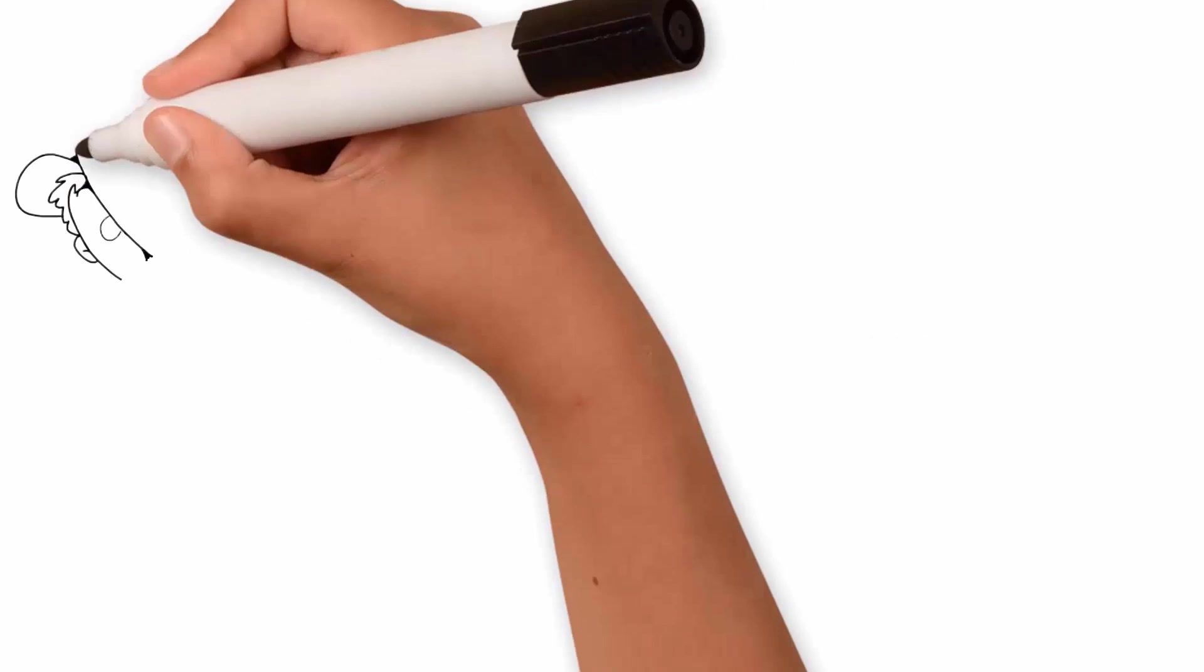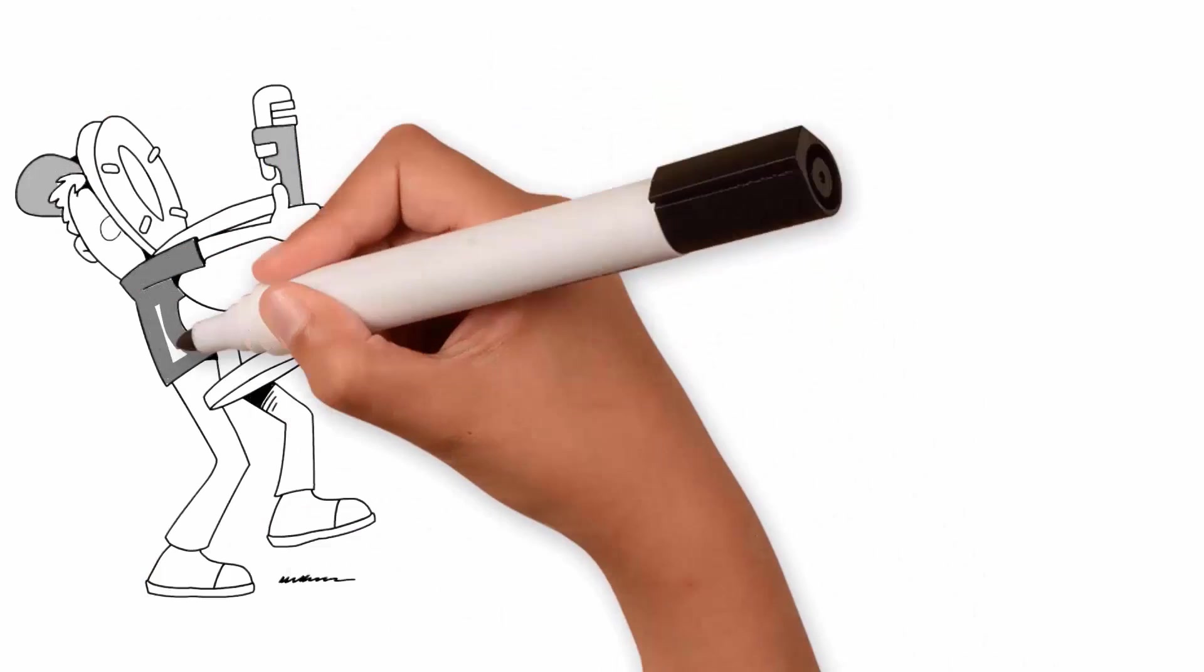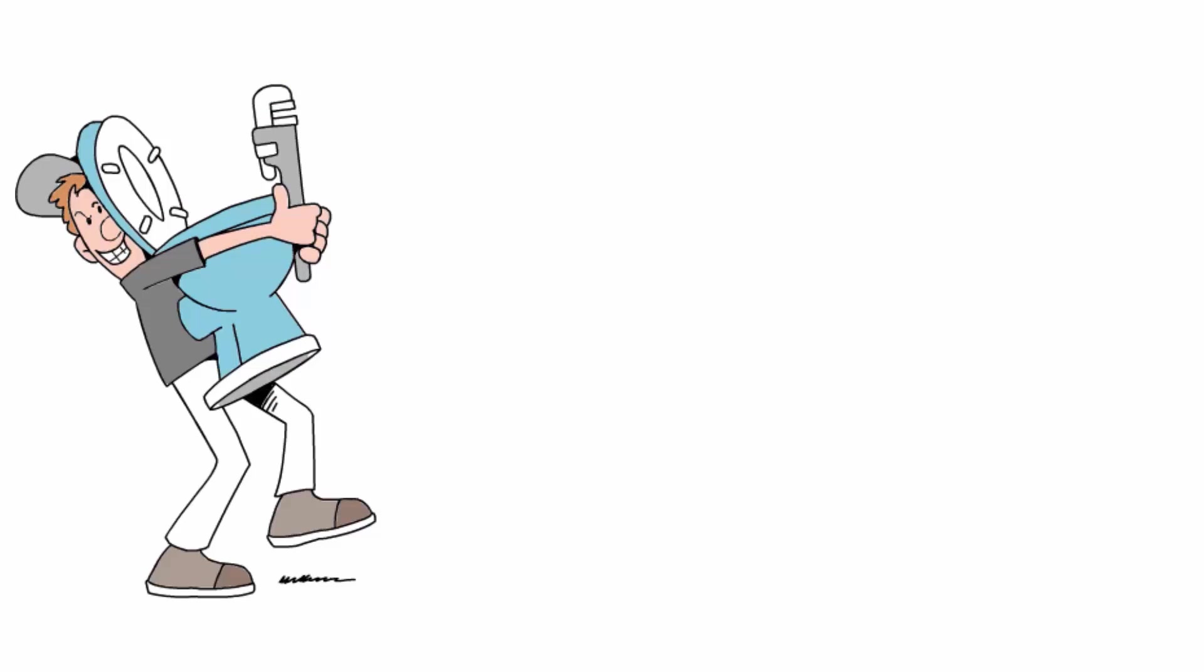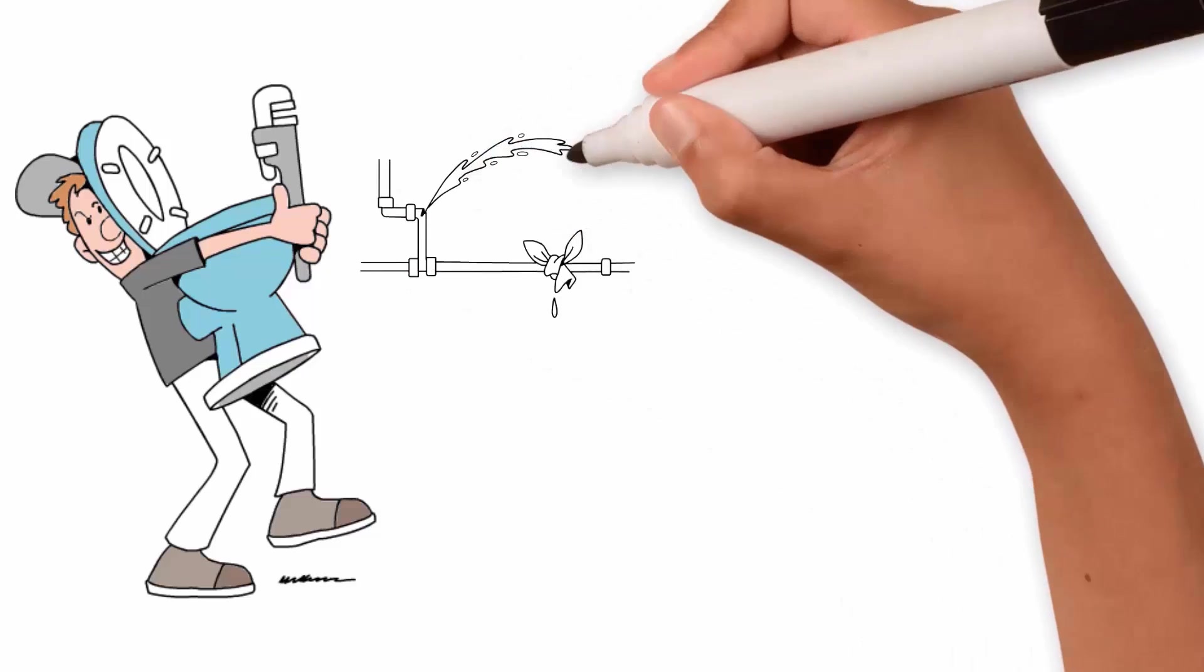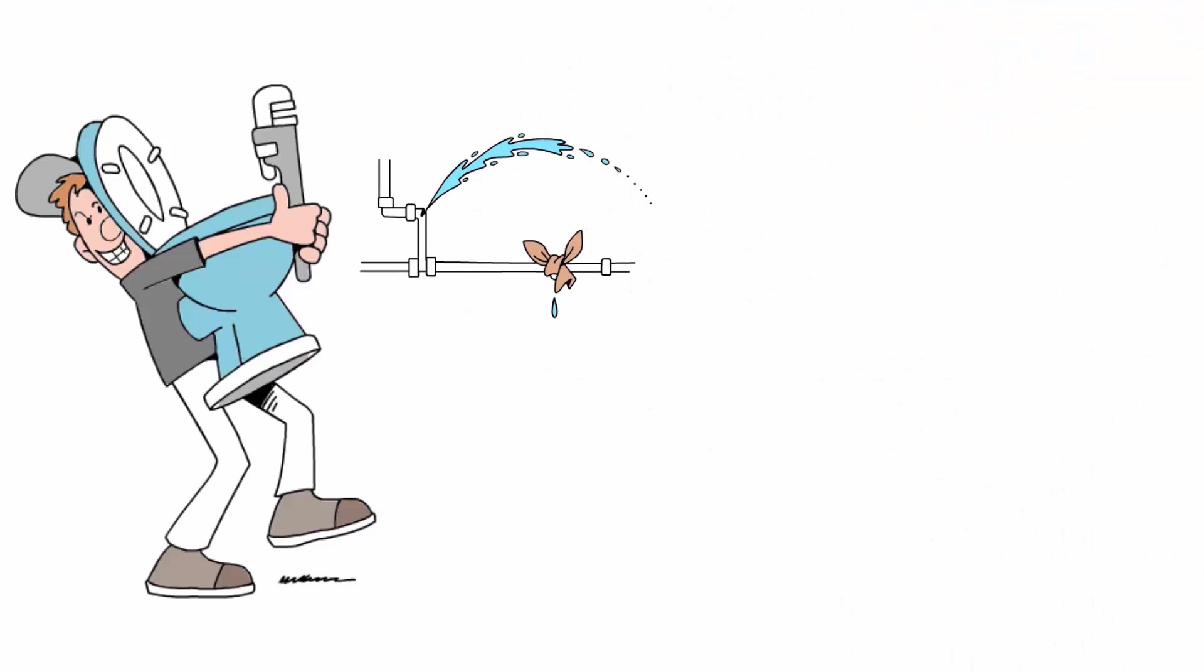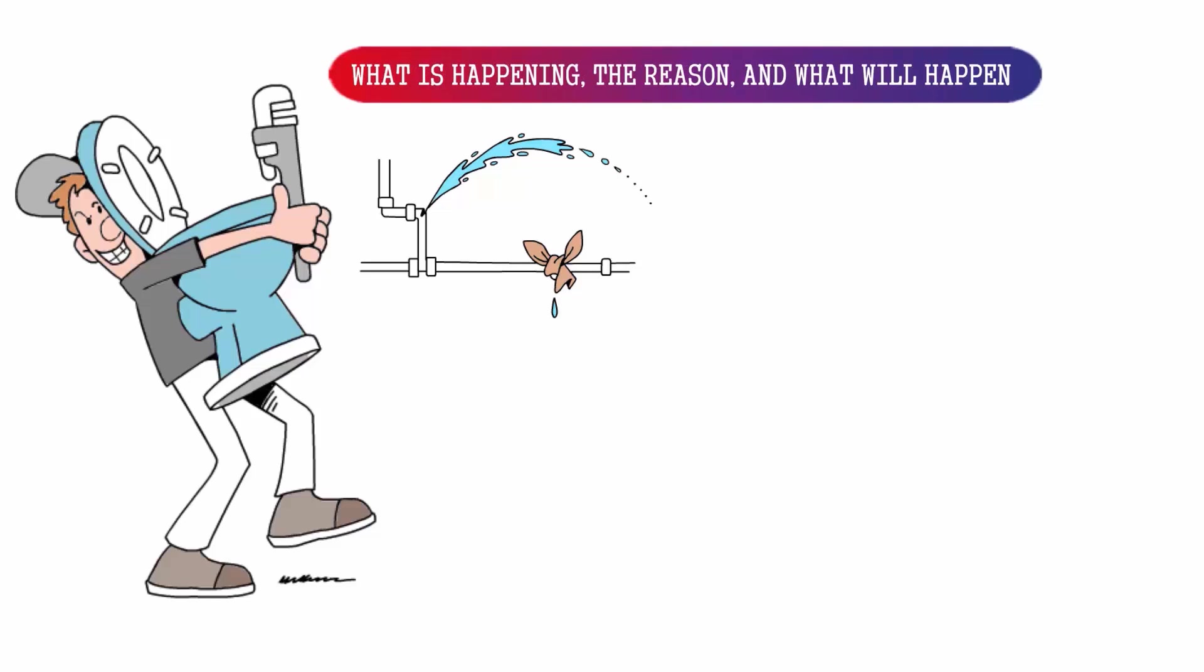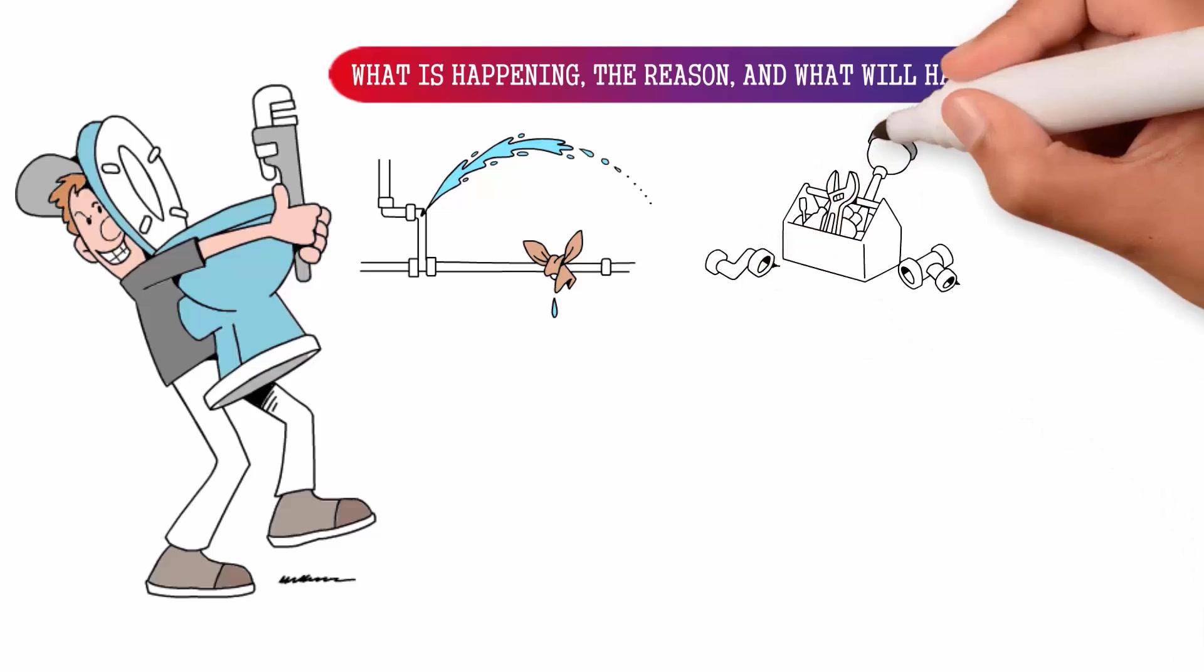Staying with our leaking example, the plumber told you that it is leaking because of the poor plumbing—the leaky pipe. Now she tells you that if nothing is done, it will continue to spread and destroy your bathroom. Then she gives you an invoice and leaves. Well, now you know what is happening, the reason, and what will happen if you don't do anything, but you still don't have an idea how to fix it.